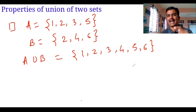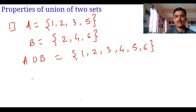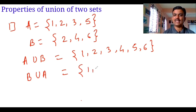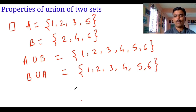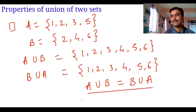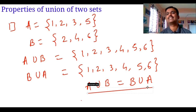Note that the repeated element is removed. Now I'm going to write B union A. I think the answer will be the same: {1, 2, 3, 4, 5, 6}. So our first property is: A union B is exactly equal to B union A. This means that the union of two sets — whether first union second or second union first — does not make a change.